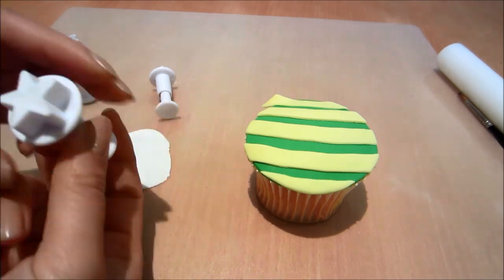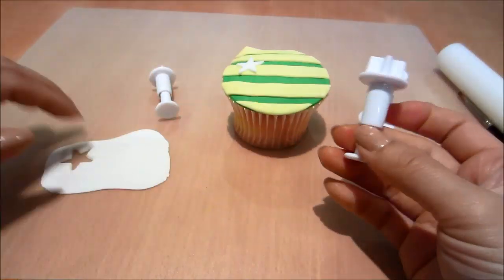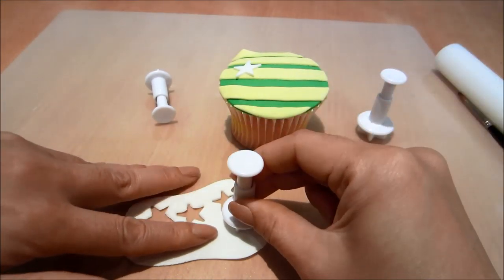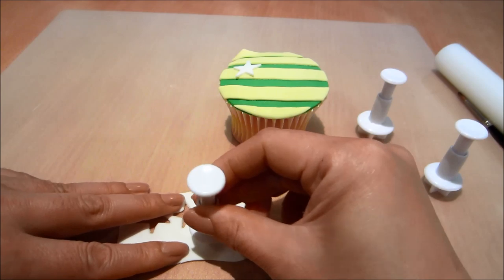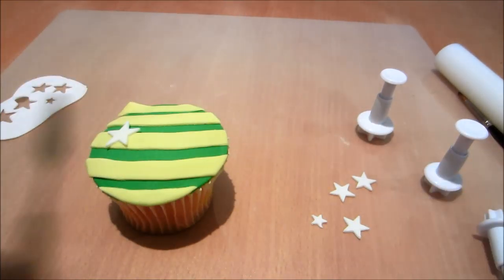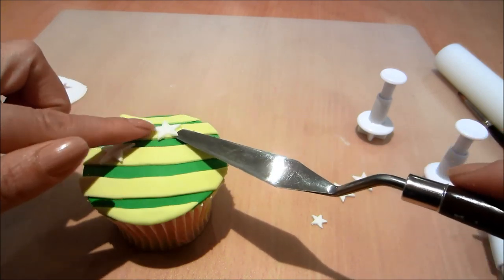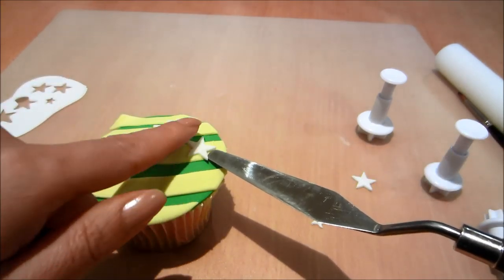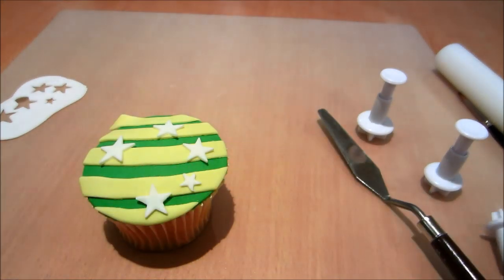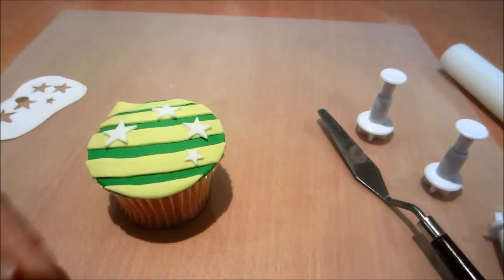Now I'm using some star plunger cutters to cut out five different sized stars, and I'm just going to glue them on with some water and my brush.